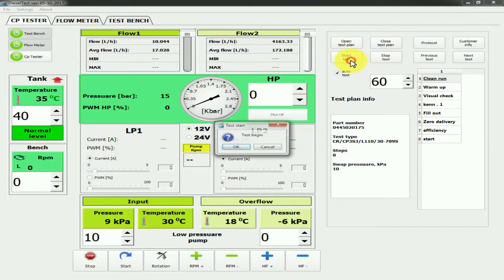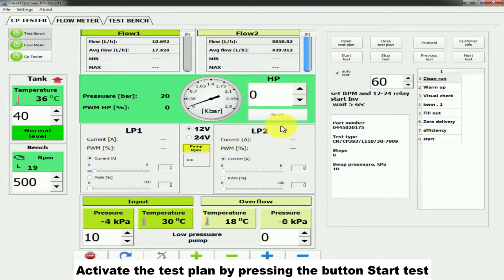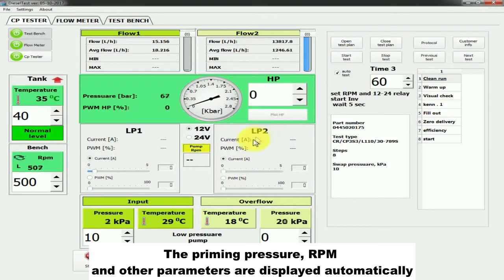Activate the test plan by pressing the button Start Test. The priming pressure, RPM, and other parameters are displayed automatically.